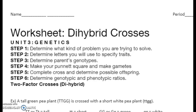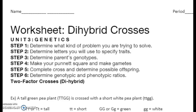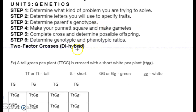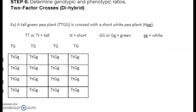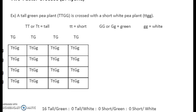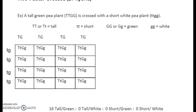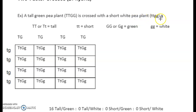Now we're going to look at the dihybrid cross worksheet. Dihybrid crosses in Mendelian genetics means we're crossing two specific traits. We were looking at one trait with our Punnett box square, and here's the example: we have a homozygous dominant crossed to the homozygous recessive parent.